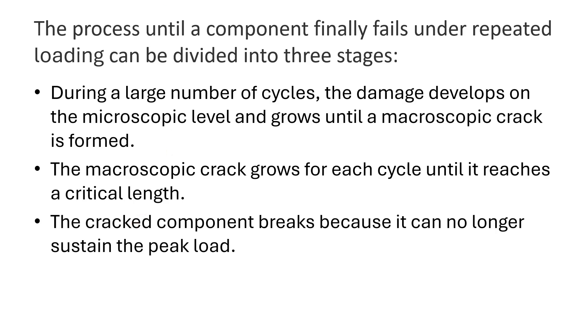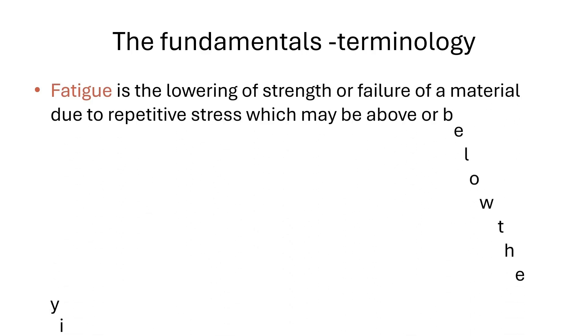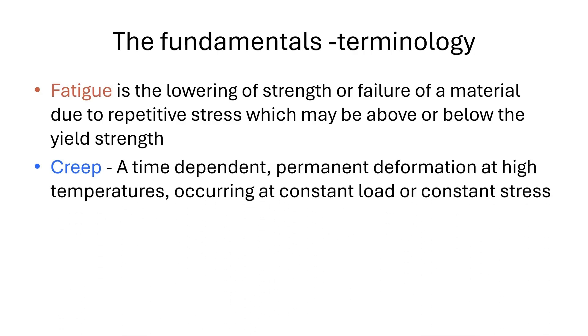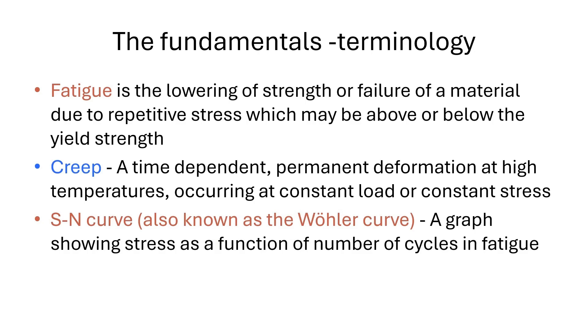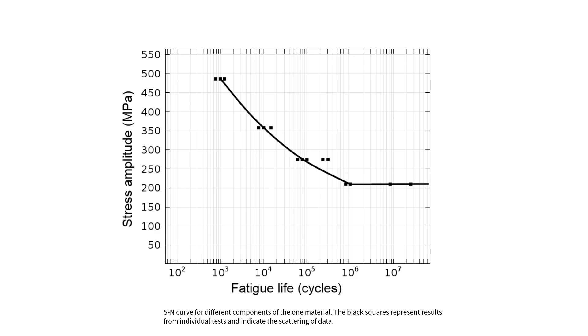And here are some important terminologies for a better understanding of this chapter. So the first one, we have fatigue that we can define as the lowering of strength or failure of a material due to repetitive stress, which may be above or below the yield strength. And we have creep that we can define as time dependent permanent deformation at high temperature that occurs at constant loading or constant stress. And also we have S-N curve, also known as a Wöhler curve. So this can be defined as a graph showing stress as a function of number of cycles in fatigue. And the S-N curve allows us to calculate the number of cycles until a component is likely to fail for a given stress range.